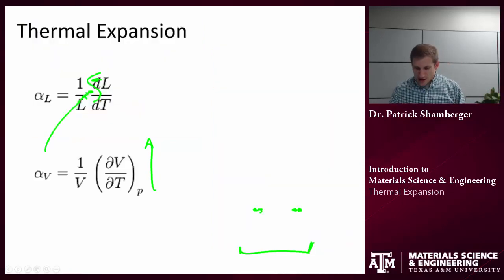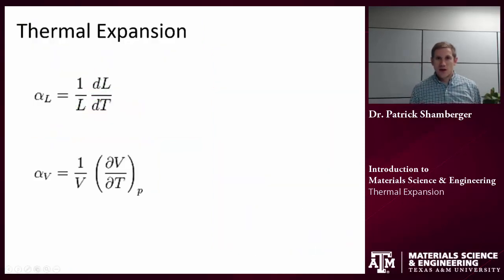First, let's think about a macroscopic description. To describe this expansion with temperature, I can define what's called the coefficient of linear thermal expansion. That's this term alpha sub L. It's defined as 1 over the length times the change in length per unit temperature. For every degree Celsius, Kelvin, Fahrenheit that the material heats up, there will be some change in length. That term is defined as dL dT.